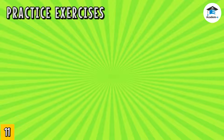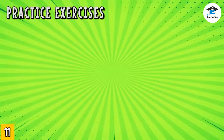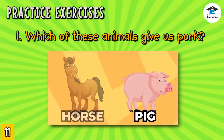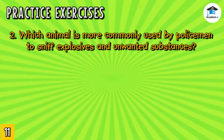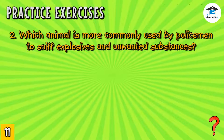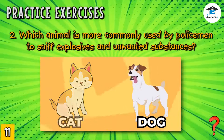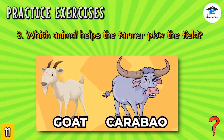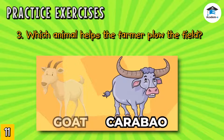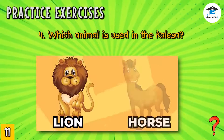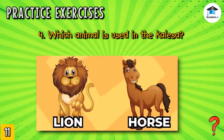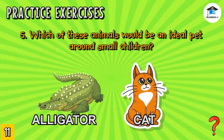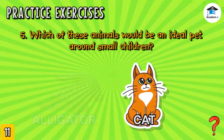Let's have a short exercise. One: Which of these animals gives us pork — the horse or the pig? The answer is pig. Two: Which animal is more commonly used by policemen to sniff explosives — the cat or the dog? The answer is dog. Three: Which animal helps the farmer plow the field — the goat or the carabao? The answer is carabao. Four: Which animal is used in the calessa — the lion or the horse? The answer is horse. Five: Which would be an ideal pet around small children — the alligator or the cat? The answer is cat. Very good, you've got them all right!